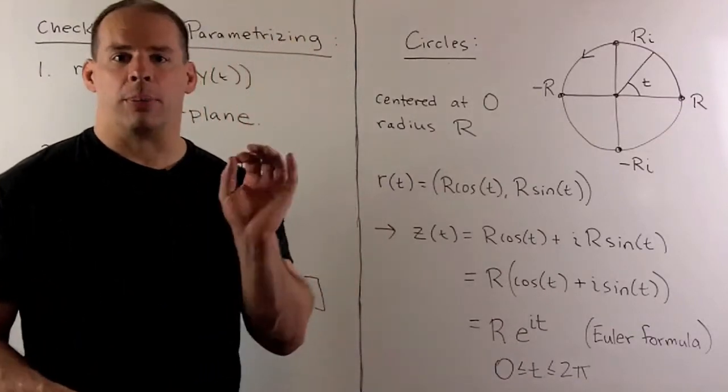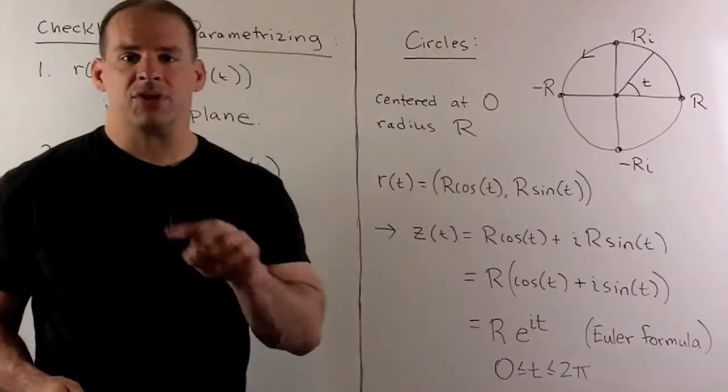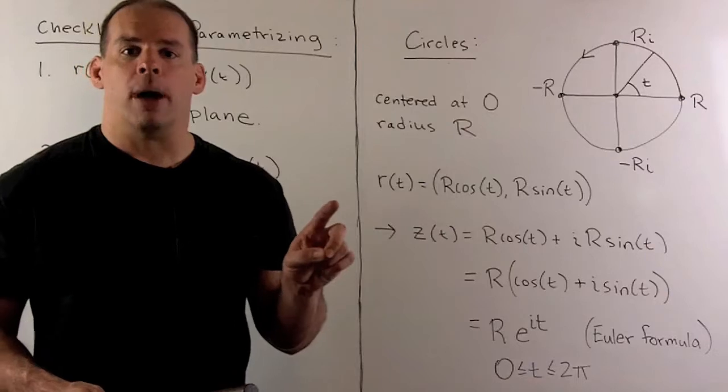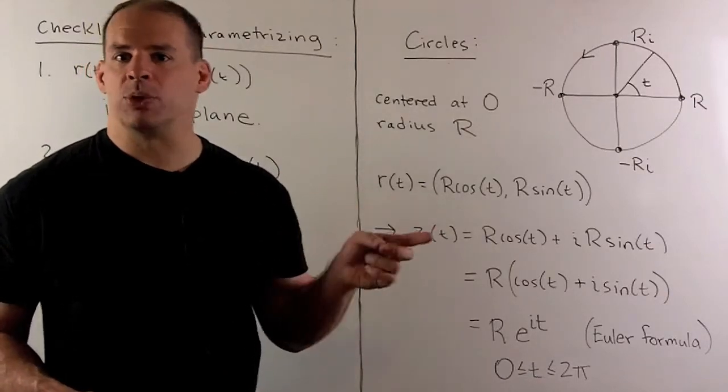For our parameter, t is going to be between 0 and 2 pi. So that gives us one loop. If we want multiple loops, if I want two loops, I would go to 4 pi. Three loops, we go to 6 pi.